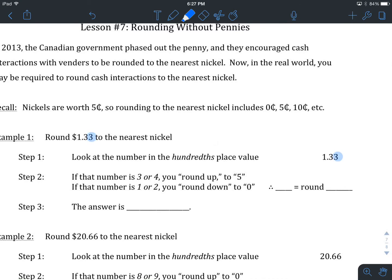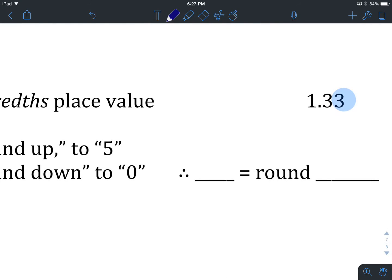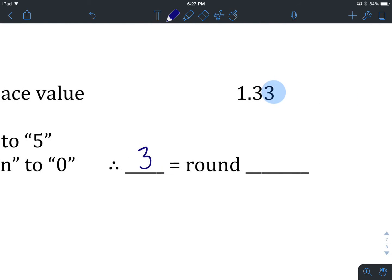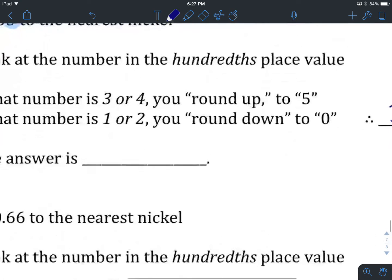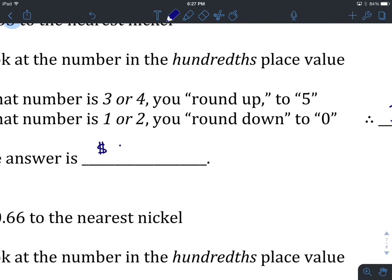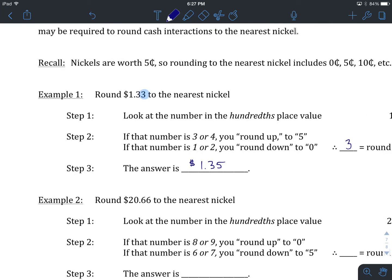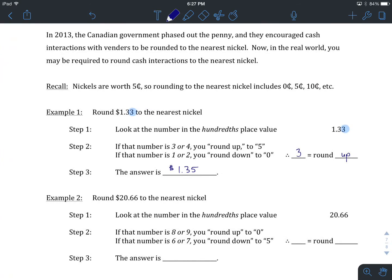Therefore, since this is a 3, we are going to round up, which means that we take whatever that number was, in this case a 3, and round it up to a 5. So the answer then is going to be $1.35. This is rounding to nickels, which is what businesses do when they are making a cash interaction with you.